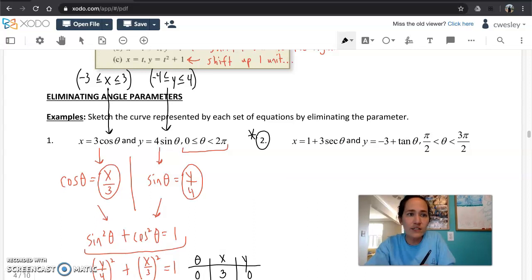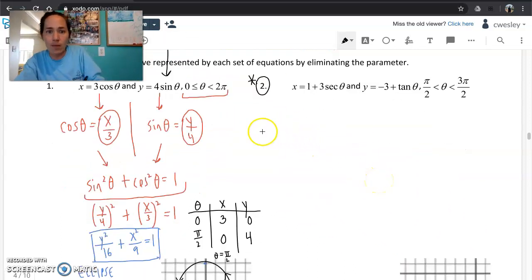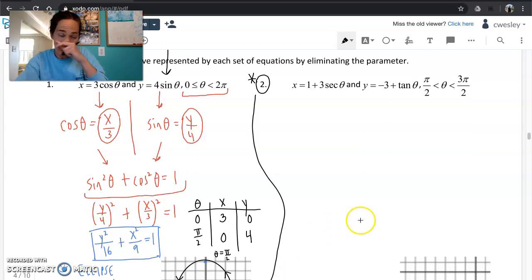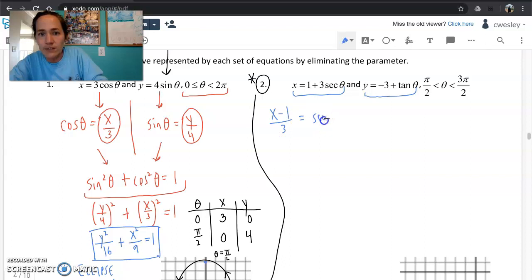So let's shift our thinking to number two, but I do want to start this problem in the exact same way by taking the two expressions that are given at the top and let's isolate the trig function in both of them. I wonder why secant and tangent were picked. That must have been by design that we could relate each of these equations to a different Pythagorean identity. Let's solve for secant here. So x minus one over three is going to equal the secant of theta. And in the second part, just y plus three equals tangent.